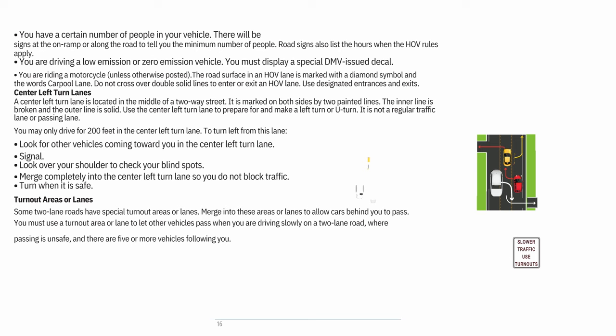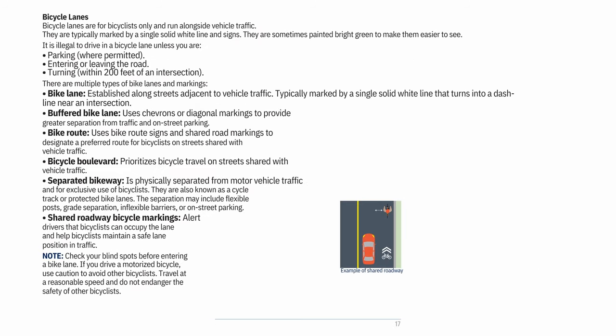Turnout areas or lanes: Some two-lane roads have special turnout areas or lanes. Merge into these areas or lanes to allow cars behind you to pass. You must use a turnout area or lane to let other vehicles pass when you are driving slowly on a two-lane road where passing is unsafe and there are five or more vehicles following you. Bicycle lanes: Bicycle lanes are for bicyclists only and run alongside vehicle traffic — typically marked by a single solid white line and signs, sometimes painted bright green.